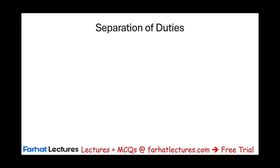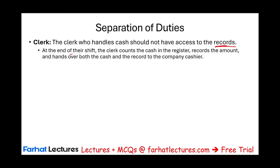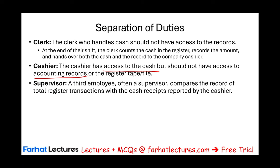Segregation of duties is critical when receiving cash over the counter. The clerk who handles cash should not have access to the records or be able to change them. If they can touch cash and change the record, they could steal with one hand and alter records with the other. At the end of their shift, the clerk counts the cash, records the amount, and hands both the cash and the record to the company's cashier. The cashier has access to the cash but should not have access to the accounting records. A third employee — often a supervisor — then compares the total register record with cash receipts reported by the cashier, and this record is used for a journal entry to record over-the-counter cash receipts.